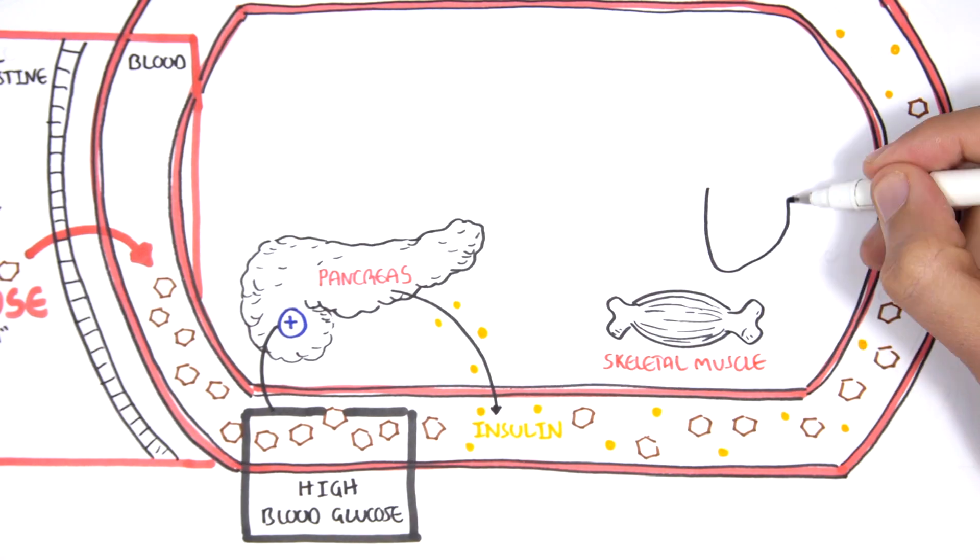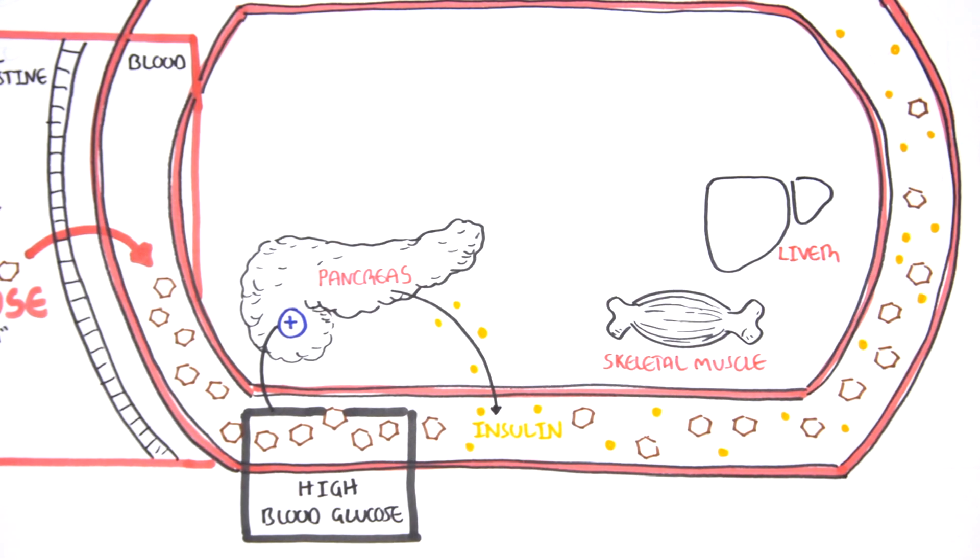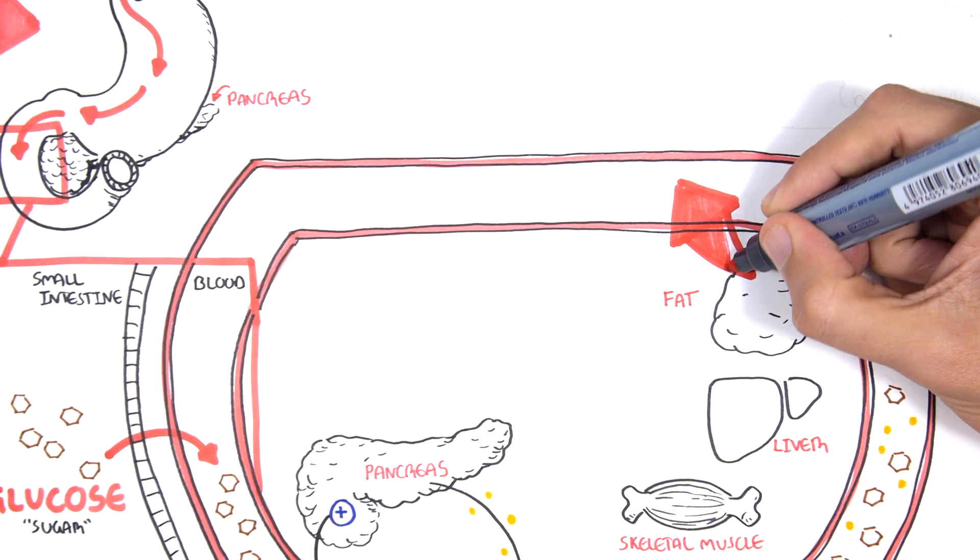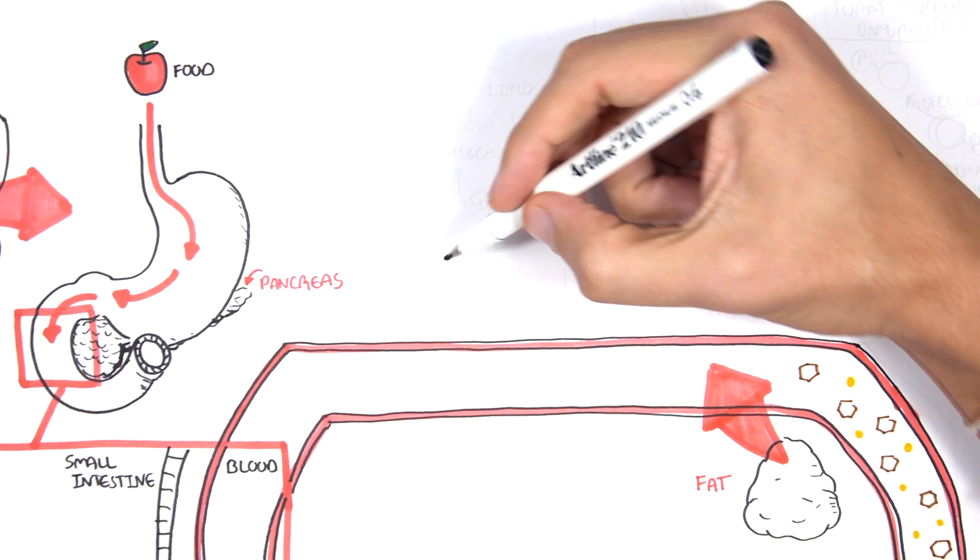Insulin targets cells such as skeletal muscle cells, liver cells and fat cells. Let us look at the fat cell in more detail and the effects insulin has on it.